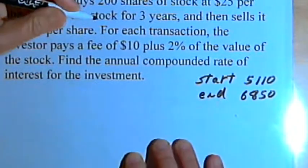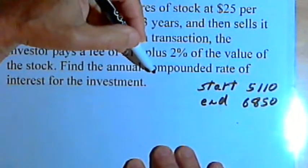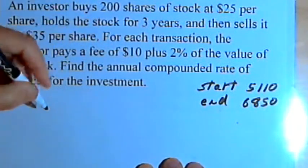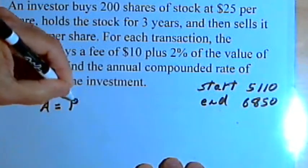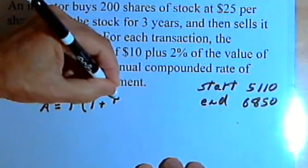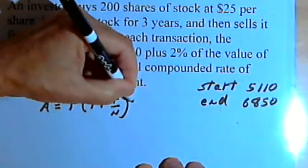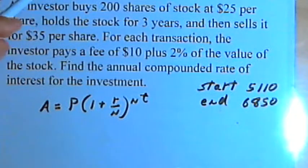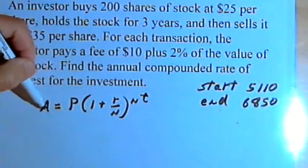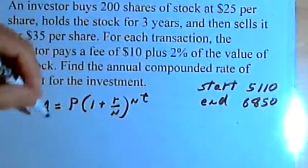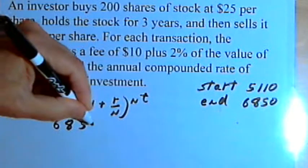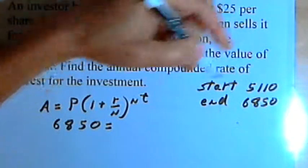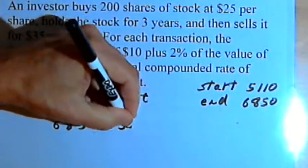The problem asks us to find the annual compounded rate of interest for the investment. So we have a formula for compounded interest. That's A equals P times (1 plus r over n) raised to the nt power. Now, let's fill in using the numbers we have. A is the amount you end up with, so he ended up with $6,850. And that equals P, which is the principal, that's how much you start with, so that's $5,110.